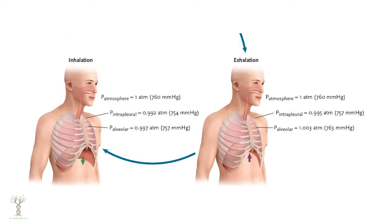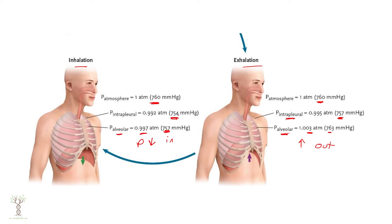If that pleural space were punctured — say from a stab wound — we would lose that negative intrapleural pressure and the lungs would collapse. That condition is called a pneumothorax. We need to maintain negative pressure in the intrapleural space to keep the lungs open.